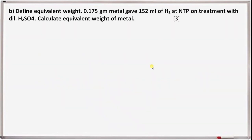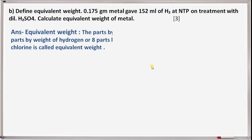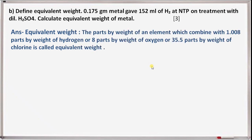Next question: define equivalent weight. The equivalent weight is the parts by weight of an element which combine with 1.008 parts by weight of hydrogen, or 8 parts by weight of oxygen, or 35.5 parts by weight of chlorine.